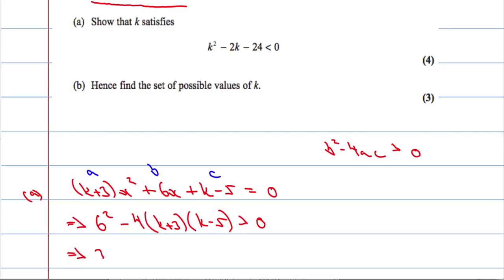So 6² is 36 minus k times k is k² times -4. So subtract 4k², k times -5, and then 3 times k is going to give me -2k. Multiply that by -4 is going to give me a positive 8k, and then we get 3 times -5 is going to give me -15. Times that by 4, we're going to get a positive 60. That must be greater than 0.